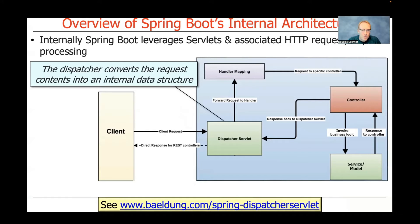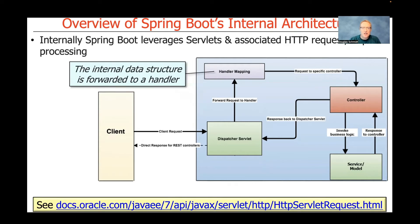Once requests arrive at the port number on the server — which you can configure through declarative means, through metadata in a properties file, which we'll talk about later — there's a dispatcher servlet that takes the HTTP request, including the header, body, URL, and URI, and converts it into an internal data structure.